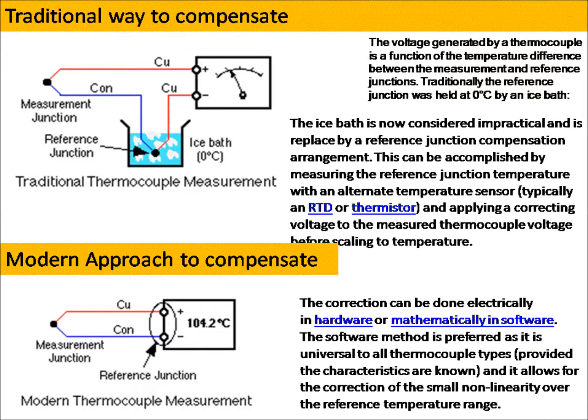Traditionally, the reference junction was held at 0 degrees Celsius using an ice bath. The ice bath is now considered impractical and is replaced by a reference junction compensation arrangement. This is accomplished by measuring the reference junction temperature with an alternate sensor — typically an RTD or thermistor — and applying a correcting voltage to the measured thermocouple voltage before scaling to temperature. The correction can be done electrically in hardware or mathematically in software. The software method is preferred as it is universal to all thermocouple types and allows correction of small non-linearity over the reference temperature range.